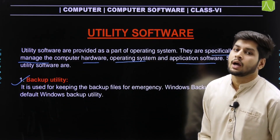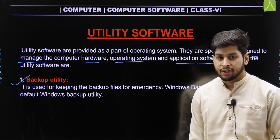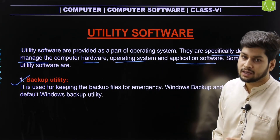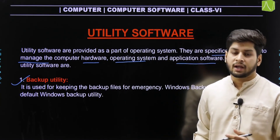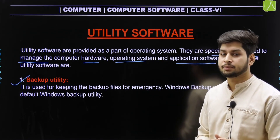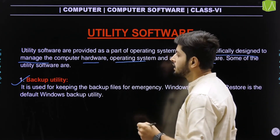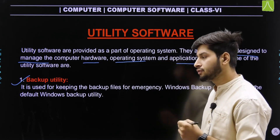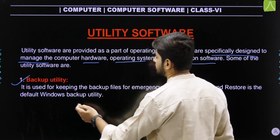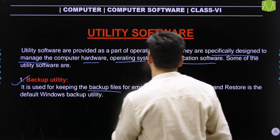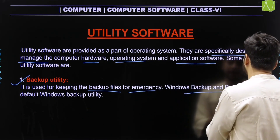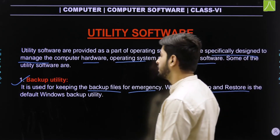In Windows, the default backup utility allows you to create a backup and restore the system. Backup utility is a default Windows software. It is used for keeping backup files for emergencies. Windows Backup and Restore is the default Windows backup utility.